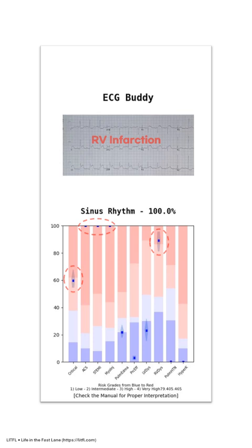Let's look at a real case example. This is a typical STEMI case with ST elevation in the inferior leads. The rhythm is sinus rhythm, and the severity is high, with biomarkers for ACS, STEMI, and myocardial injury at their peak, and a significant risk of RV dysfunction. This allows the user to recognize the high risk of shock, start monitoring the patient, activate the cath lab for a clear STEMI, and avoid vasodilators like nitroglycerin due to the high risk of RV infarction.